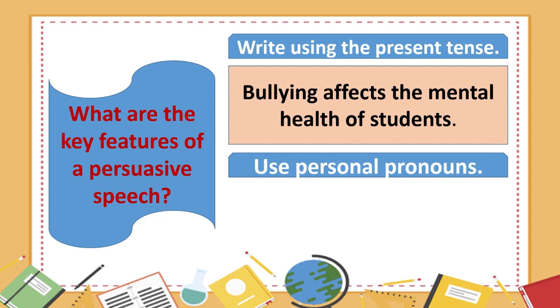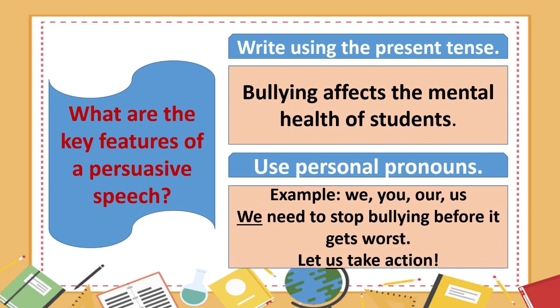Number 2: Use personal pronouns. Examples are we, you, or us. These personal pronouns make the audience believe you are speaking only to them. It is important to include your audience and your thinking. By using these pronouns, you make them feel like you are all on the same side of the issue. For example, we need to stop bullying before it gets worse.